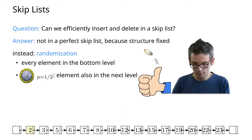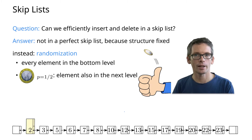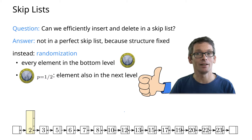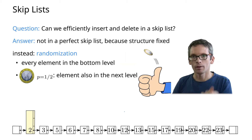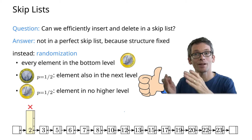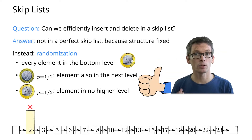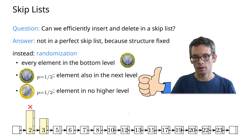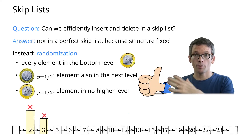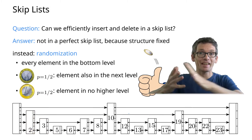Let's do this. Heads — so 2 goes to the next level. Let's do it again. Heads again — so 2 goes to the next level again. Again. Tails — so this time 2 does not go to the next level, and also to no level above that. And now we can do the same for the 3. Heads. Tails. So 3 is in two levels. We can do this for all of the elements and that will give us a skip list.